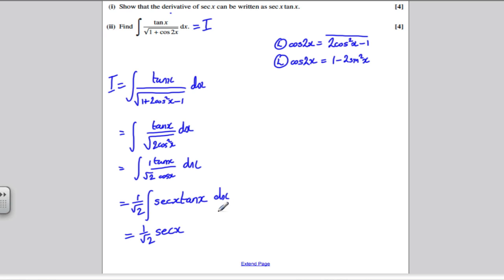would be simply sec x. So the answer to this is 1 over root 2 sec x. And obviously, when you do that, you get a constant of integration, which I'm going to call c. And hence, we finished that 8 mark question.